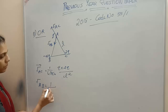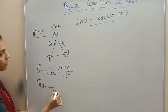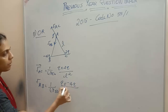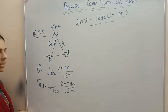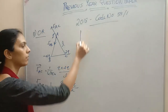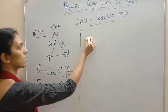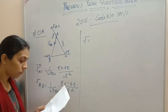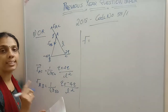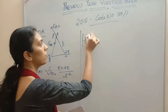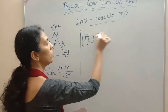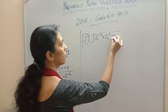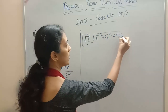FAC will be 1 by 4 pi epsilon 0, Q1 Q2 by R square. Side is L — each side having length L — so it is L square. And FAB equals 1 by 4 pi epsilon 0, Q into minus 4Q divided by L square. Now, how we can find out the total force acting on Q? The formula for magnitude of resultant force is: